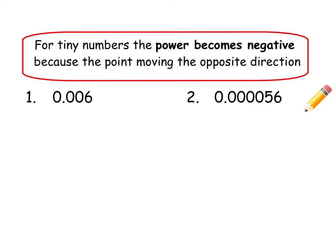So, basically, for tiny numbers, the power becomes negative because the point is moving in the opposite direction. So let's look at these two examples. 0.006, we still put the decimal point after the first digit, so it's going to go after the 6. So that's going to become 6 times 10. We are moving our decimal point from here to here. Now that has moved 3 places, so we put negative 3.